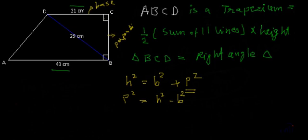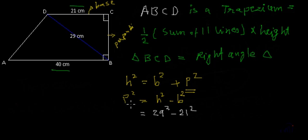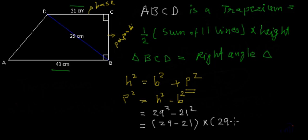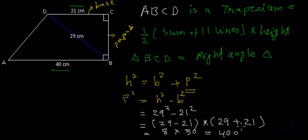The value of H is 29 and the value of B is 21. Substituting, P² = 29² − 21². Using the identity A² − B² = (A − B)(A + B), we get (29 − 21)(29 + 21) = 8 × 50 = 400. So P = √400 = 20 centimeters.